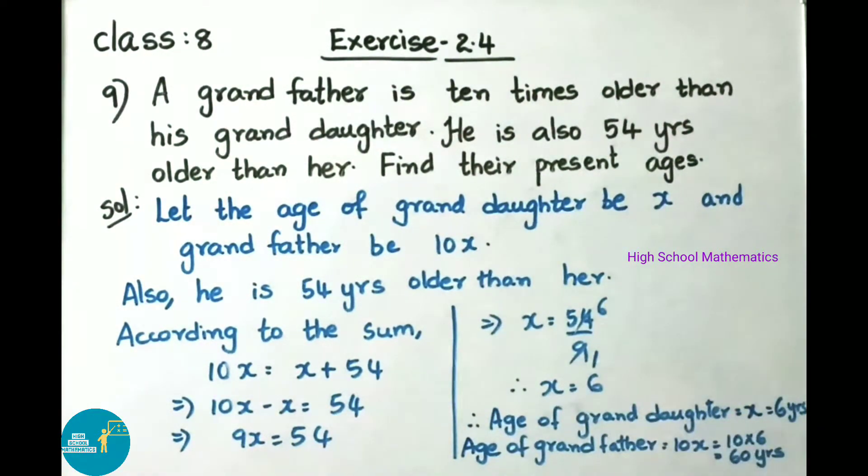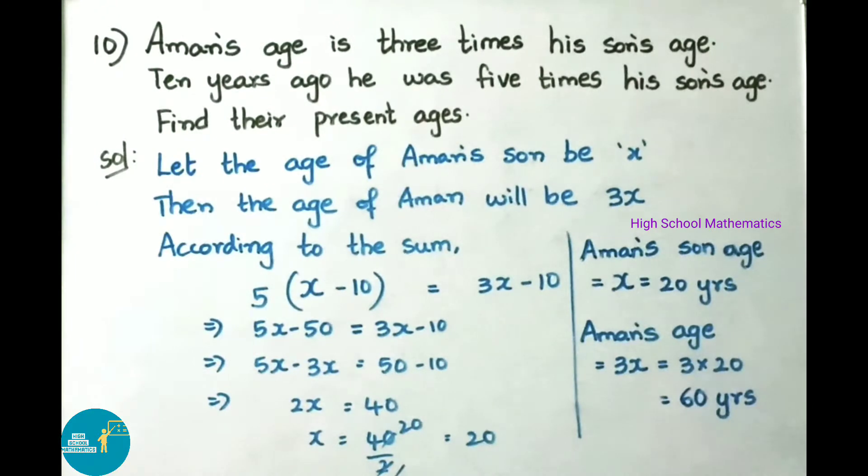Therefore, x equals 6. Therefore, age of granddaughter is x, that is 6 years, and age of grandfather is 10x, that equals 10 into 6, that is 60 years. Therefore, granddaughter's age is 6 years and grandfather's age is 60 years.